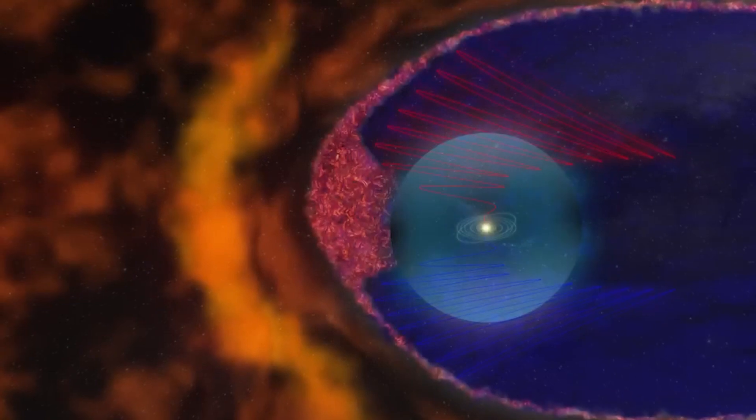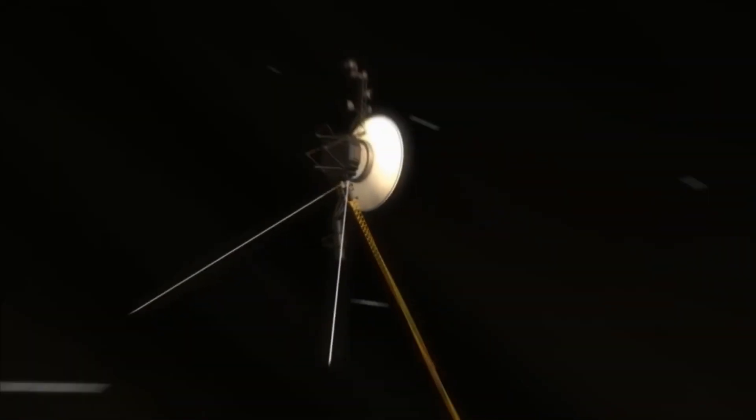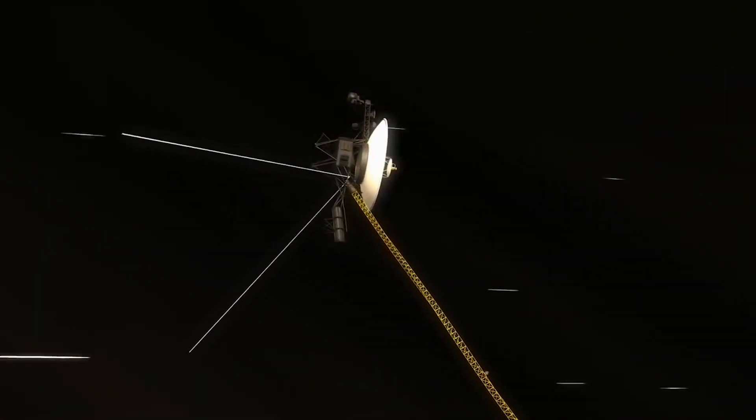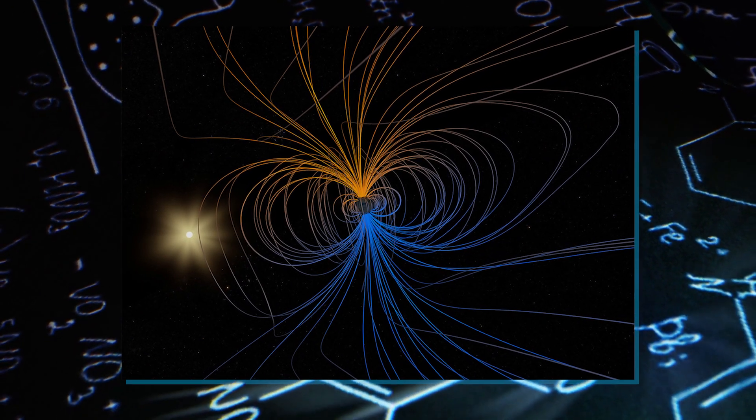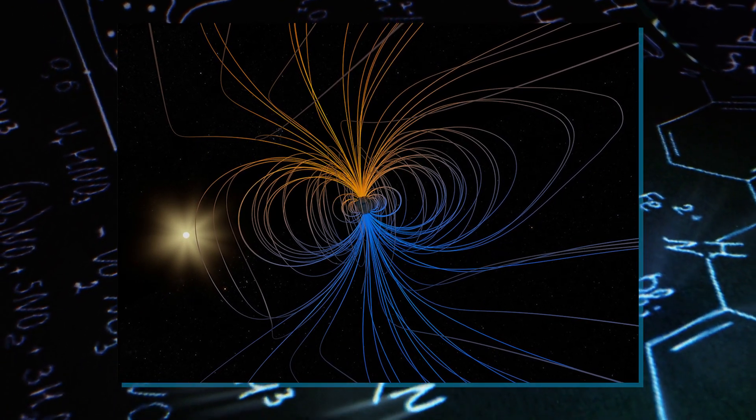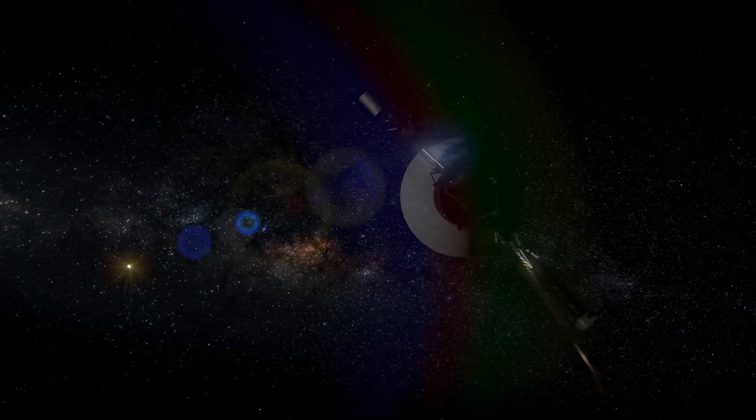As Voyager 1 ventured farther from our star, it reached a point where the speed of the solar wind decreased, and the interstellar medium, including particles and magnetic fields from other stars, became more prominent. This transition marked the spacecraft's entry into interstellar space.